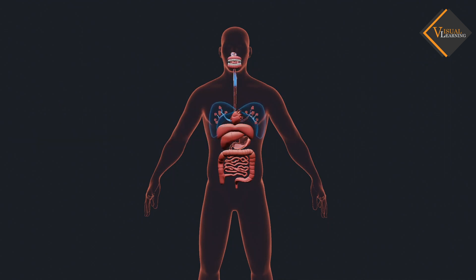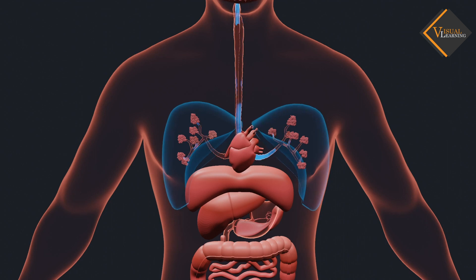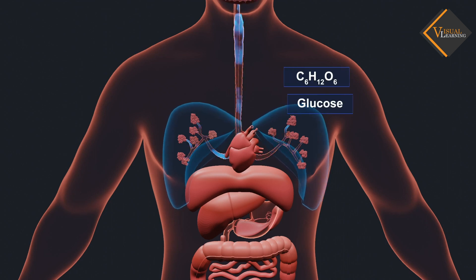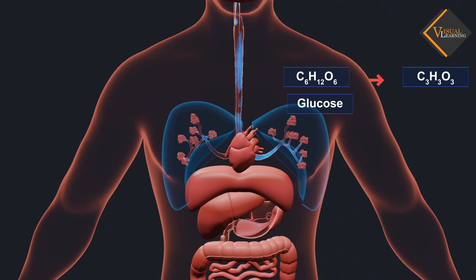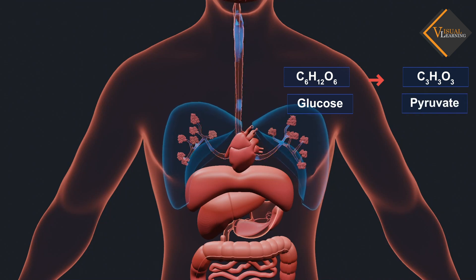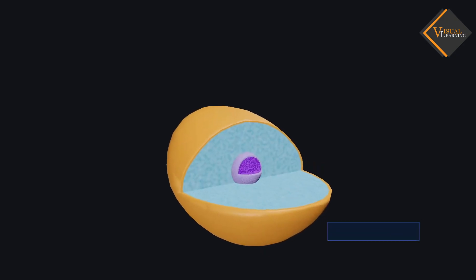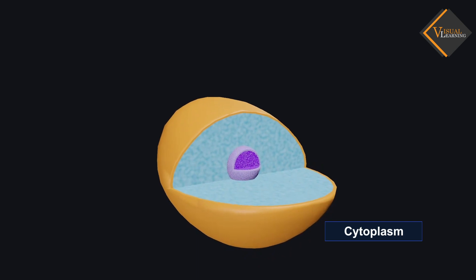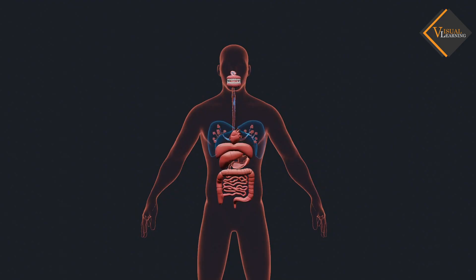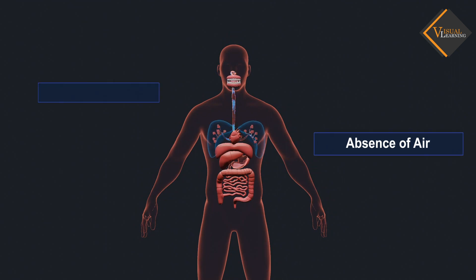In all cases, the first step is the breakdown of glucose, a 6-carbon molecule, into a 3-carbon molecule called pyruvate. This process takes place in the cytoplasm. Since this process takes place in the absence of air, it is called anaerobic respiration.